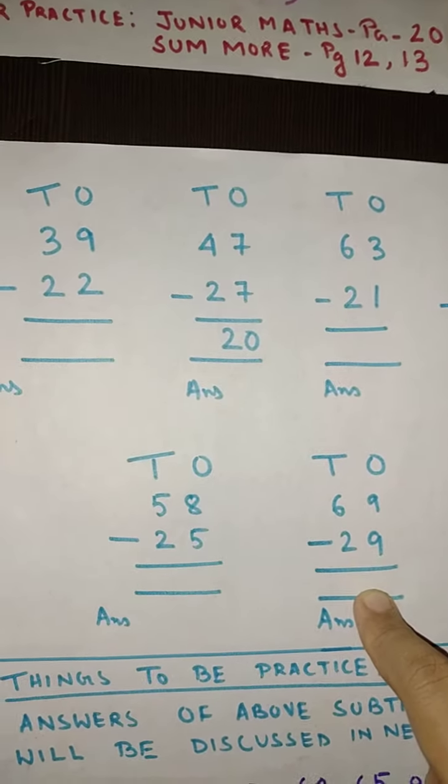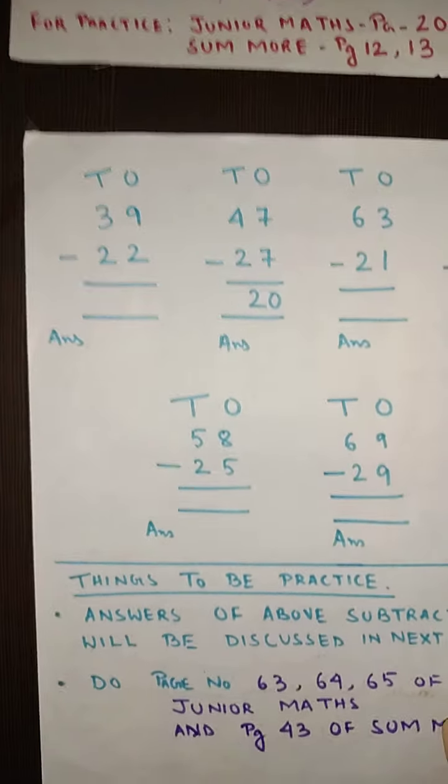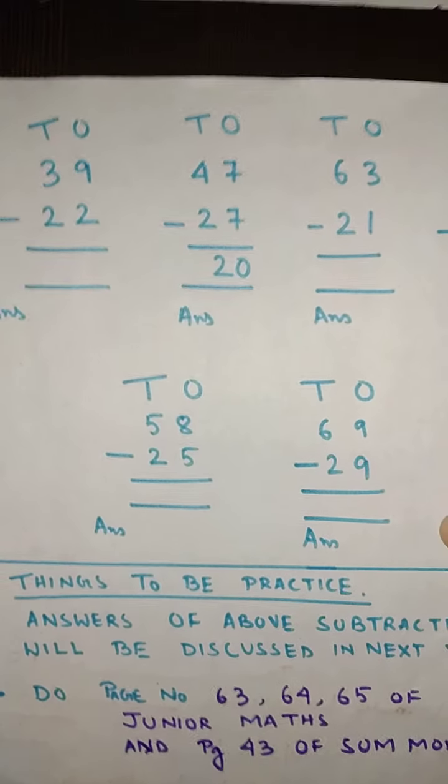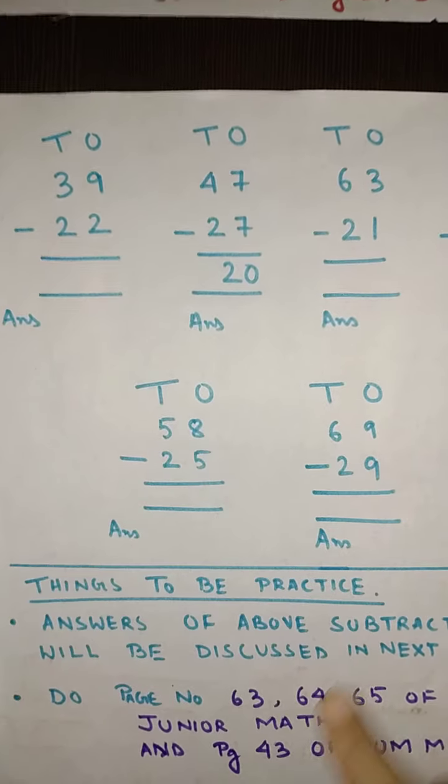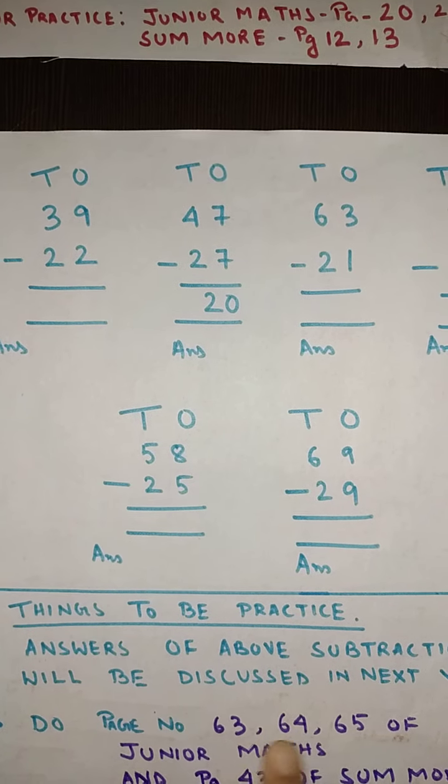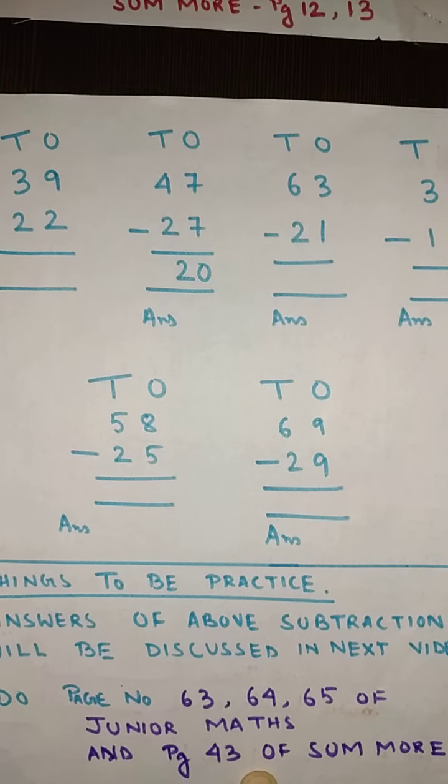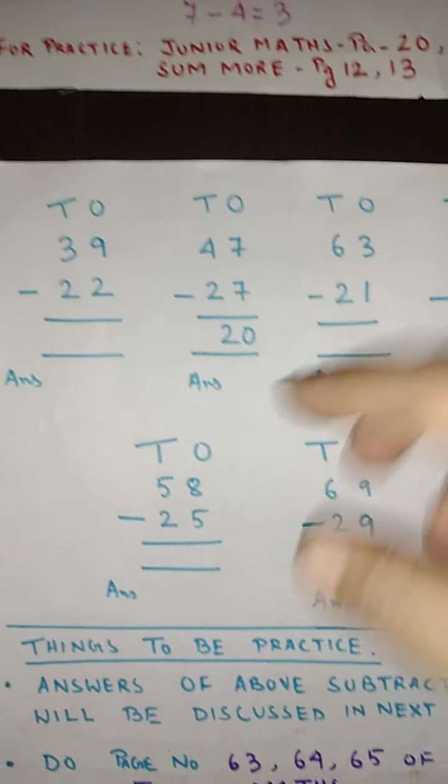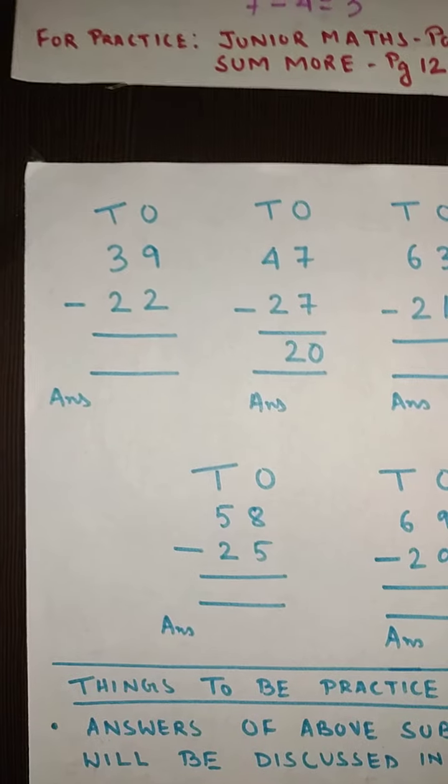Now students these are the 10 sums which I have given you, 10 subtraction which you will be solving in your math CW copy. And the answers of this above subtraction we will discuss in the next video. So by that time I hope you will be trying solving this subtraction. And also for practice work you can take out your junior math book page number 63, 64 and 65. And in some more book you will be taking out page number 43. And you will find this type of subtraction over there.